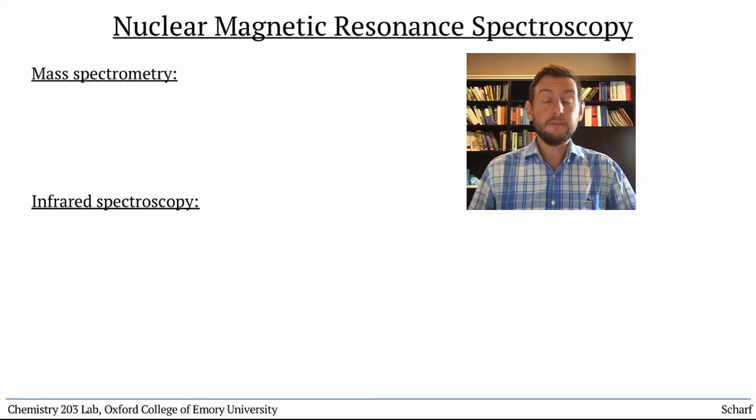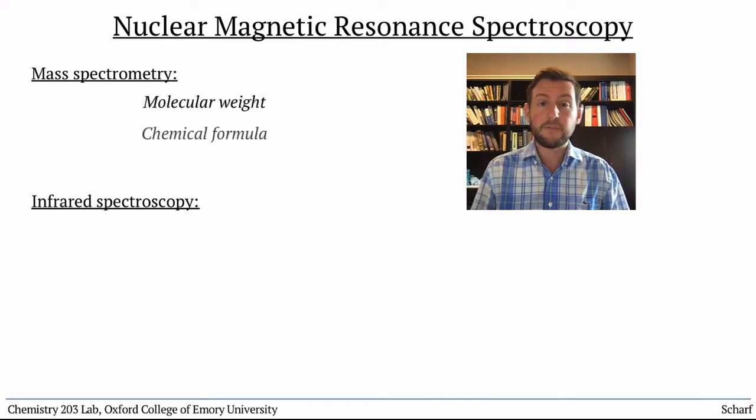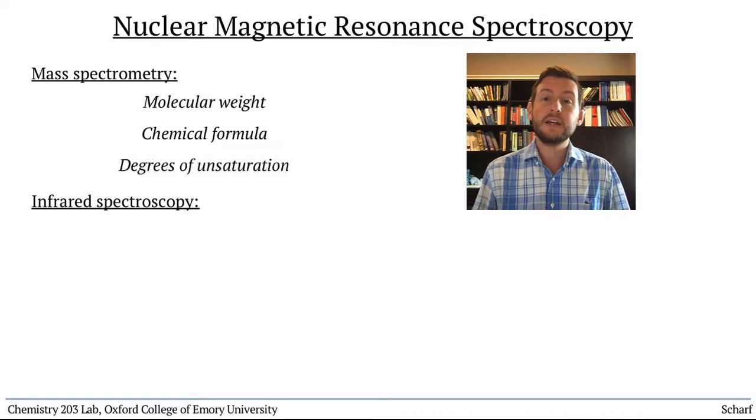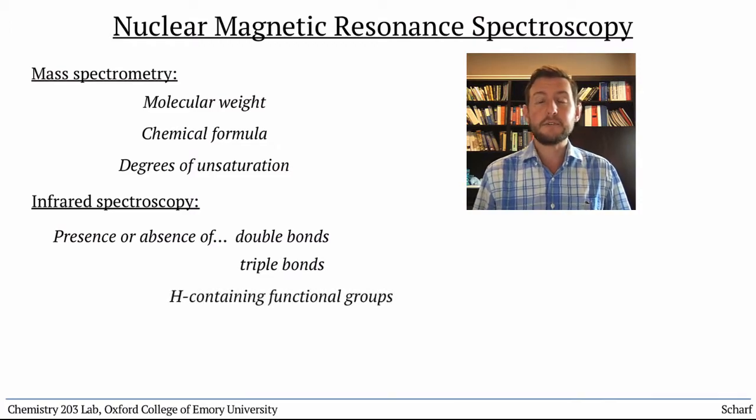Mass spectrometry and infrared spectroscopy give us important information about a compound: its molecular weight, chemical formula, degrees of unsaturation, and the presence or absence of double bonds, triple bonds, and hydrogen-containing functional groups.